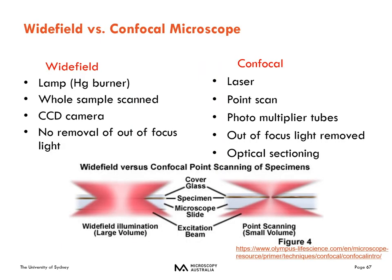Comparing wide-field versus confocal microscopy: wide-field uses a lamp (like mercury or LED) illuminating the whole sample simultaneously and uses CCD cameras, with no removal of out-of-focus light. Confocal uses lasers and raster-scans a point across the sample — talking about pixel dwell times of around two microseconds per pixel — using individual photomultiplier tubes. This achieves optical sectioning by eliminating out-of-focus light.